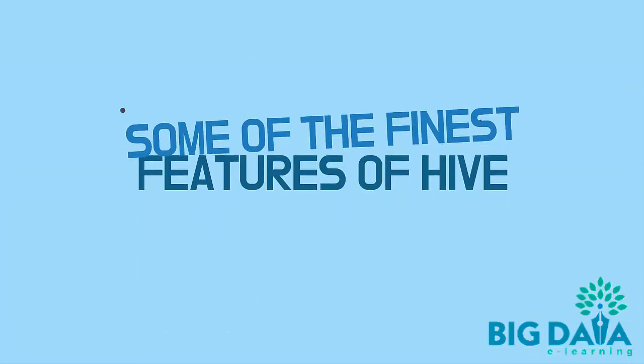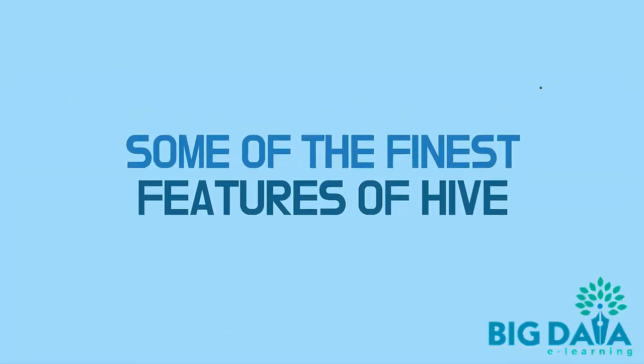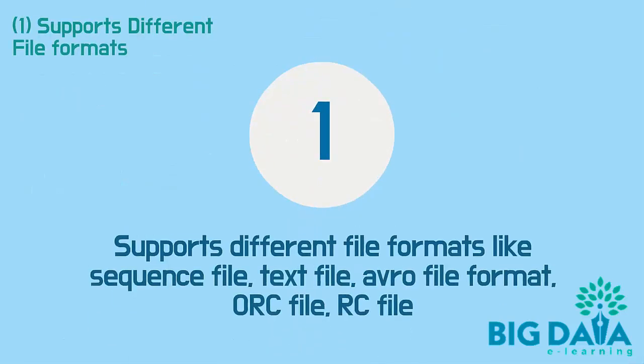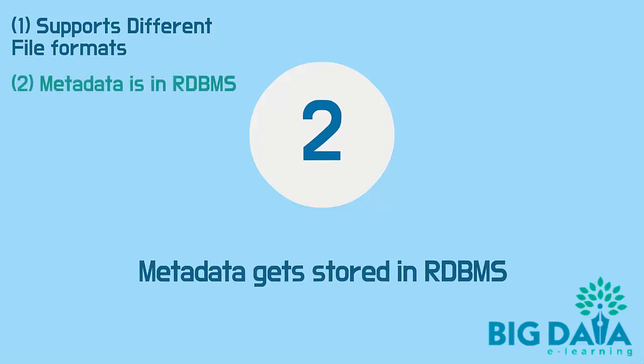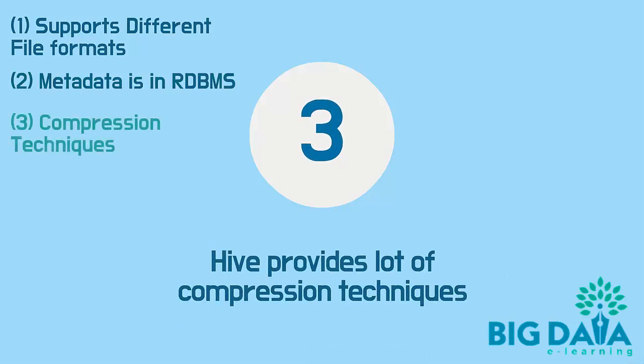Some of the finest features of Hive: It supports different file formats like sequence file, text file, Avro file format, ORC file, and RC file. Metadata gets stored in an RDBMS-like Derby database. Hive also provides a lot of compression techniques, including queries on compressed data such as Snappy compression and Gzip compression.